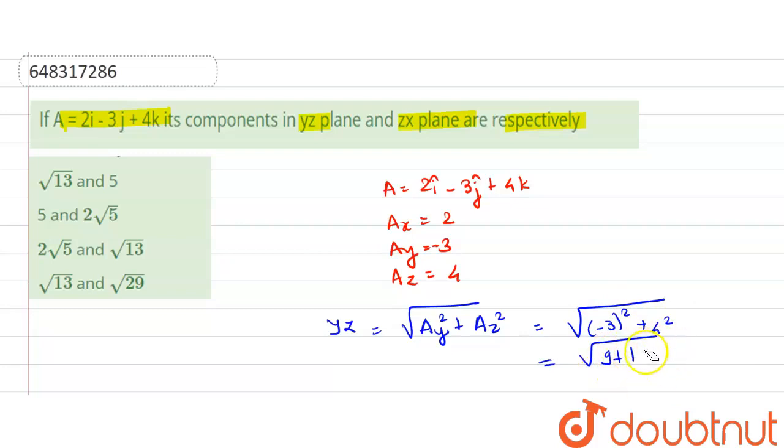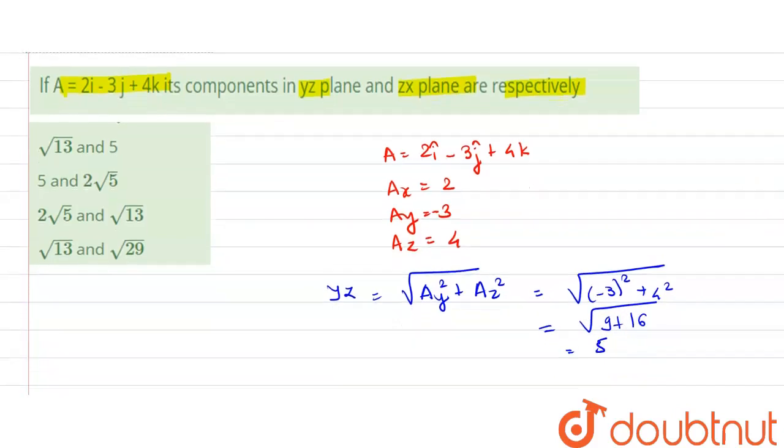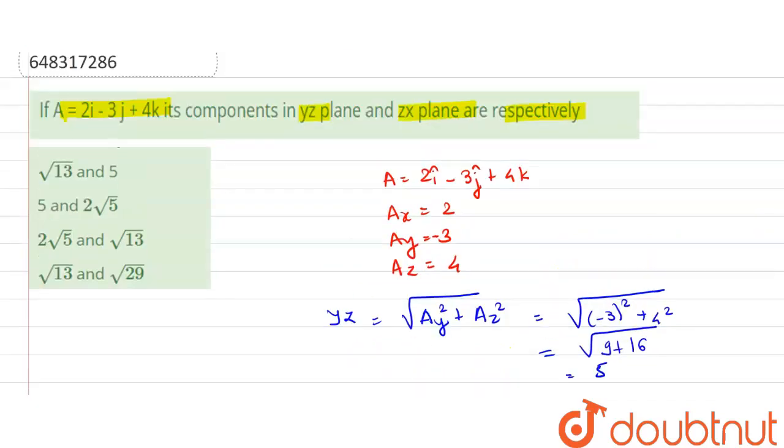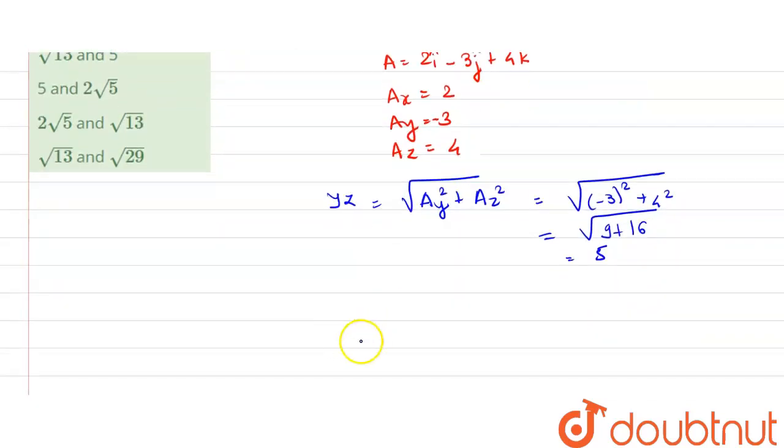Which is equal to 5. So in y-z plane, the component of the vector is 5 and the magnitude is 5. In z-x plane,